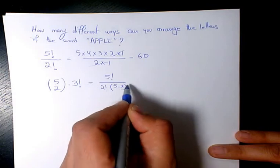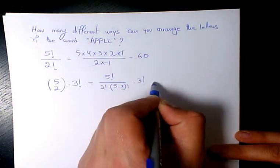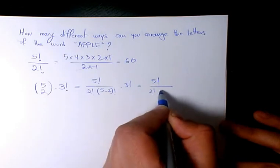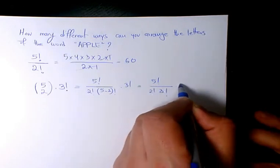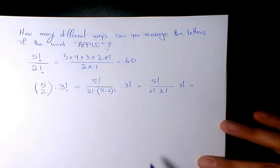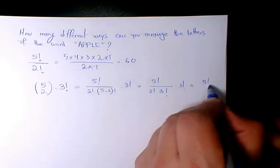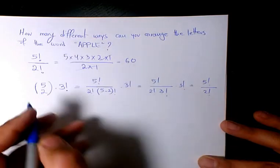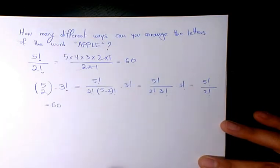So the answer is going to be the same: 5 factorial divided by 2 factorial, which again gives you the same answer, 60.